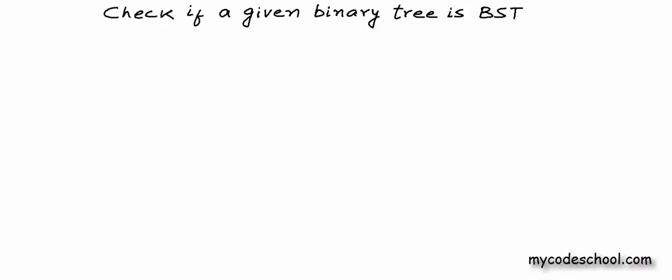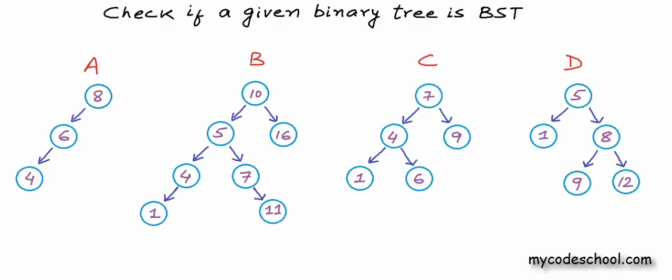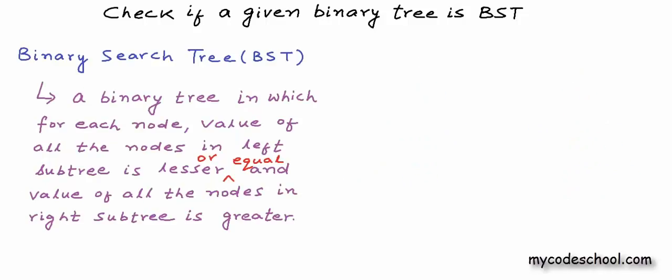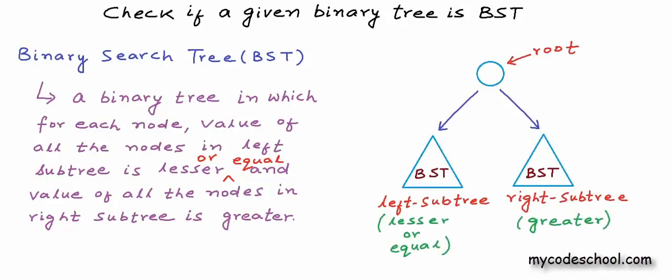As we know, a binary tree is a tree in which each node can have at most two children. All these trees drawn here are binary trees but not all of them are binary search trees. A binary search tree is a binary tree in which for each node, the value of all nodes in the left subtree is lesser (or equal, if we allow duplicates) and the value of all nodes in the right subtree is greater. This should be true for all nodes, not just the root node, so left and right subtrees should themselves also be binary search trees.